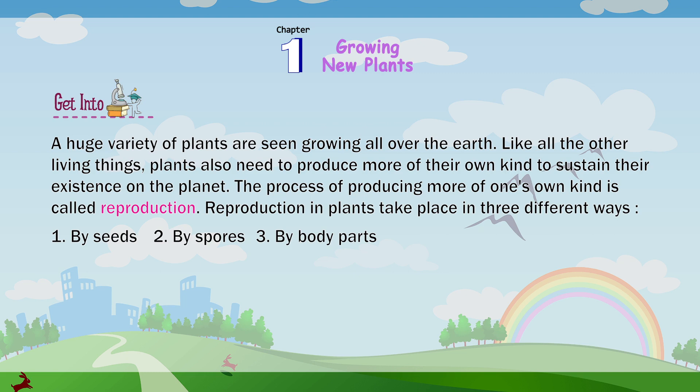Reproduction in plants takes place in three different ways: Number 1, by seeds. Number 2, by spores. Number 3, by body parts.